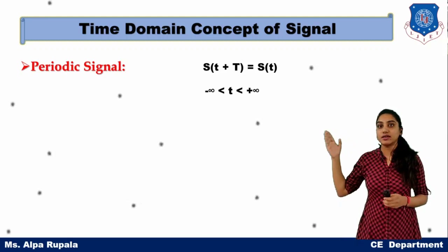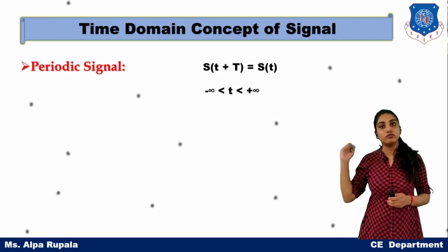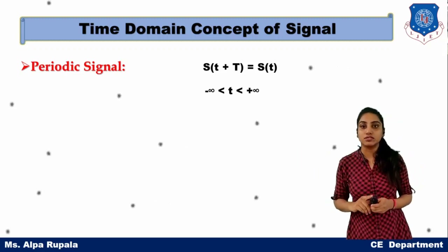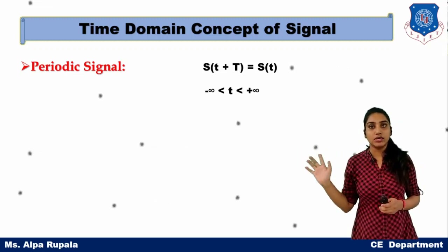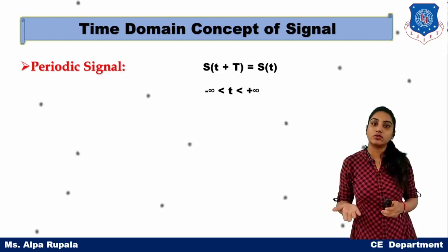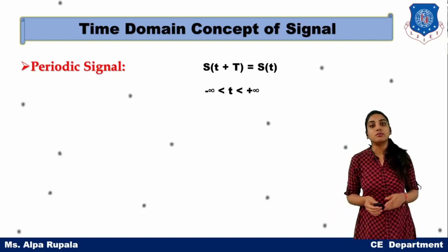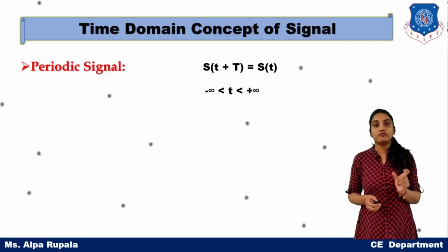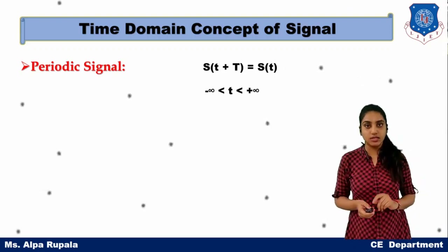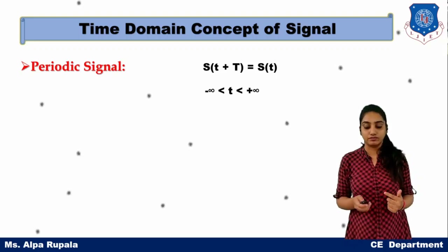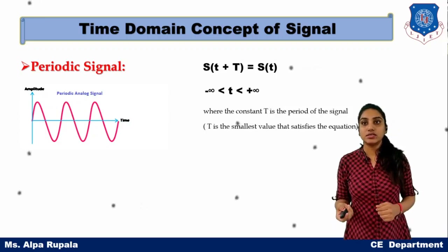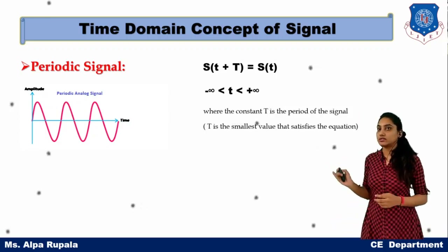The periodic signal satisfies the mathematical equation: s(t + T) = s(t), where t ranges from minus infinity to plus infinity. Here, small t is the particular time interval at which you want to calculate the signal strength, and capital T is the period — the fixed interval of time also known as the period of a signal.